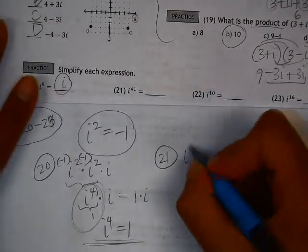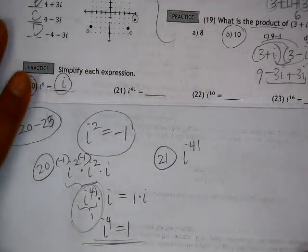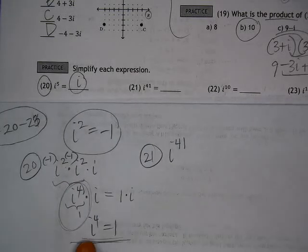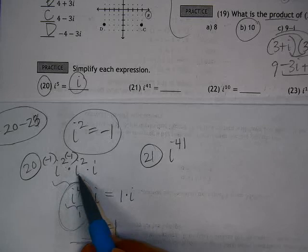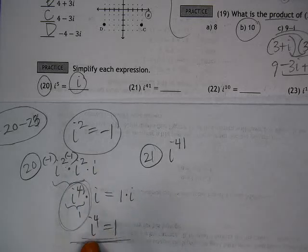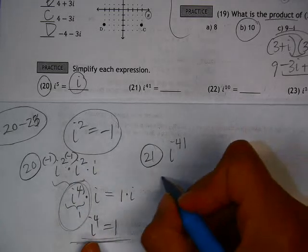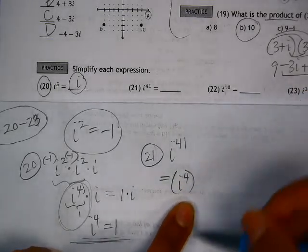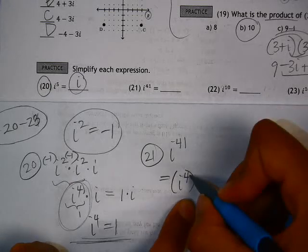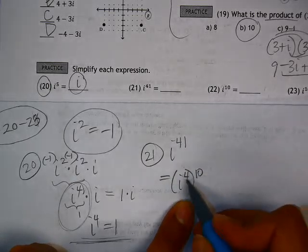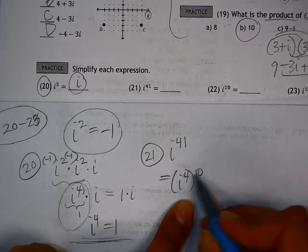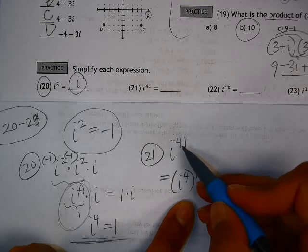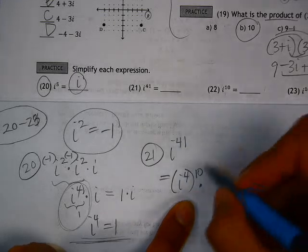So on 21, we have i to the 41. Let's see if we can split it up into i to the fourths. Instead of splitting it into i squareds, it will be a little faster if we can split it up into i to the fourths. So i to the fourth goes into i to the 41 ten times. 4 goes into 41 ten times. So we have i to the 40th, multiply exponents because of the power property. We still have one more left. i to the 40th, we need one more i.